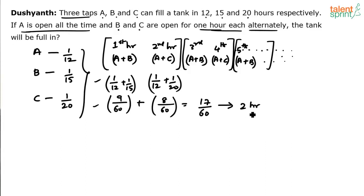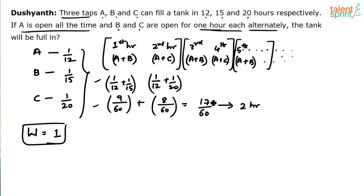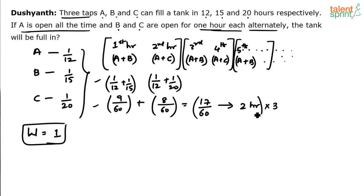Our unit is two hours and it repeats. Total work to be done is 1 unit. We need to take multiples of 17/60 and come as close as possible to 1 without exceeding it. 17 × 3 = 51, and 17 × 4 = 68 — 68/60 exceeds 1. So multiply by 3, giving 51/60 in 6 hours.